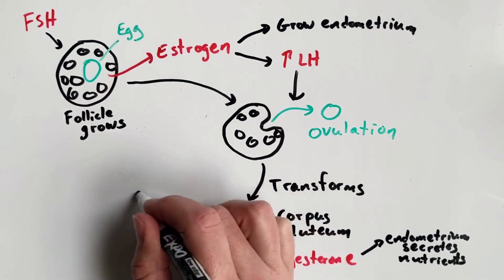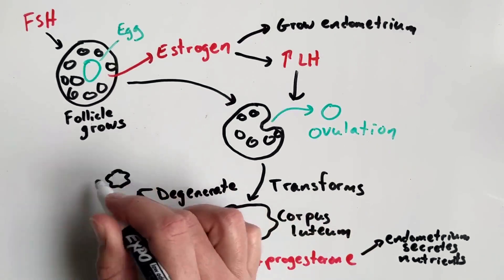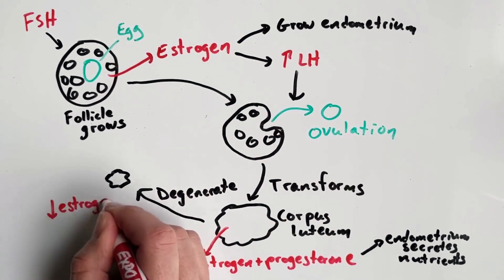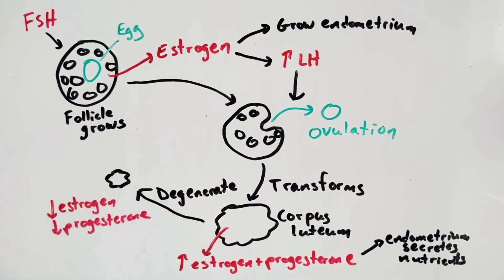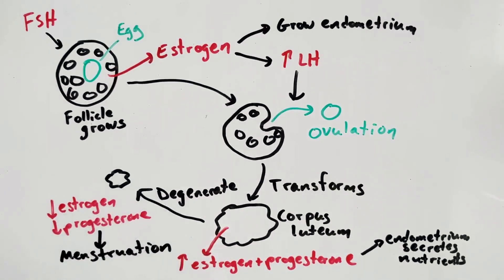If fertilization does not occur, the corpus luteum degenerates and stops secreting estrogen and progesterone. Without these hormones, the uterine lining is shed, which is known as menstruation, and the cycle begins again with a new follicle.